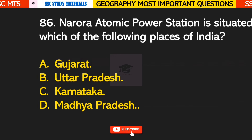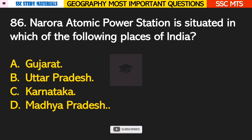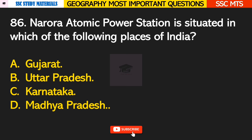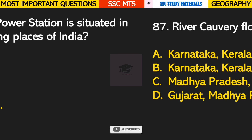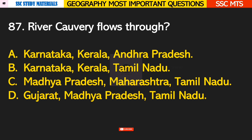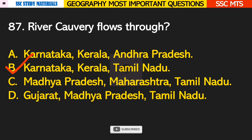Question number 86: Narora Atomic Power Station is situated in which of the following places in India? Answer B — Uttar Pradesh. Question number 87: river Cauvery flows through? Answer B — it flows through the states of Karnataka, Kerala, and Tamil Nadu.